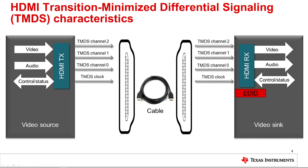HDMI uses a transition-minimized differential signaling protocol. It is a DC-coupled, 100-ohm differential signaling interface. For HDMI 1.4b, each TMDS data lane can support up to 3.2 gigabits per second for a total data rate of 10.2 gigabits per second. This allows support for resolutions up to 4K at 30 frames per second. HDMI 2.0 increases the data rate to up to 6 gigabits per second per lane for a total data rate of 18 gigabits per second, allowing support for resolutions up to 4K at 60 frames per second.